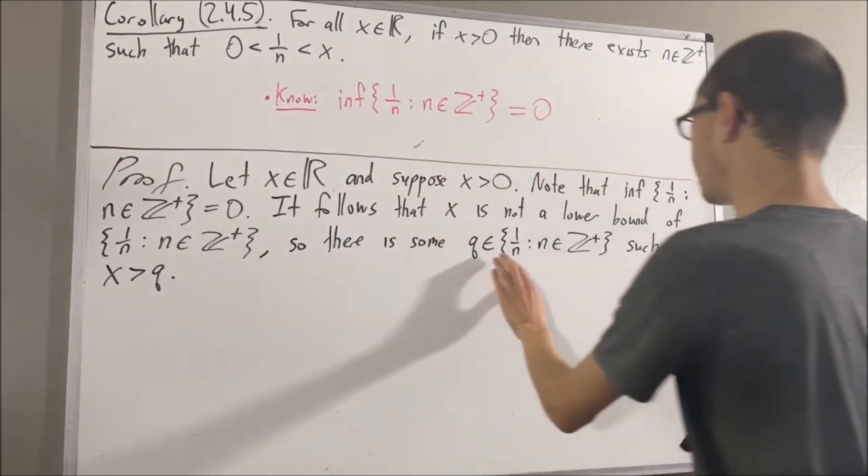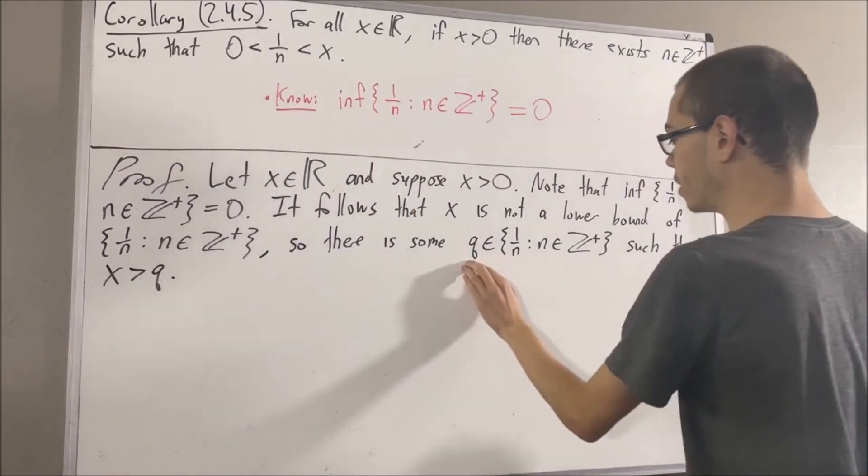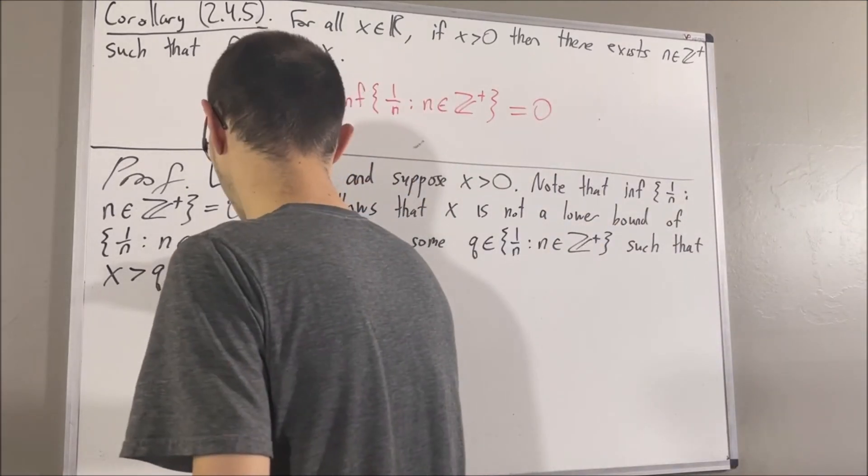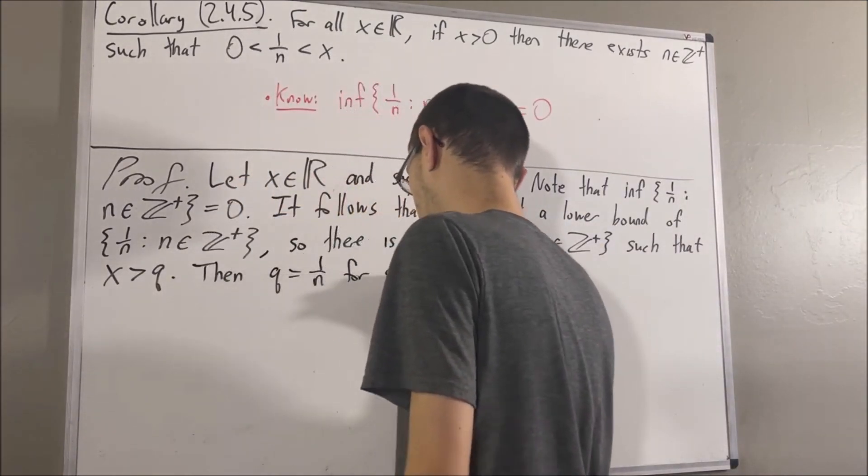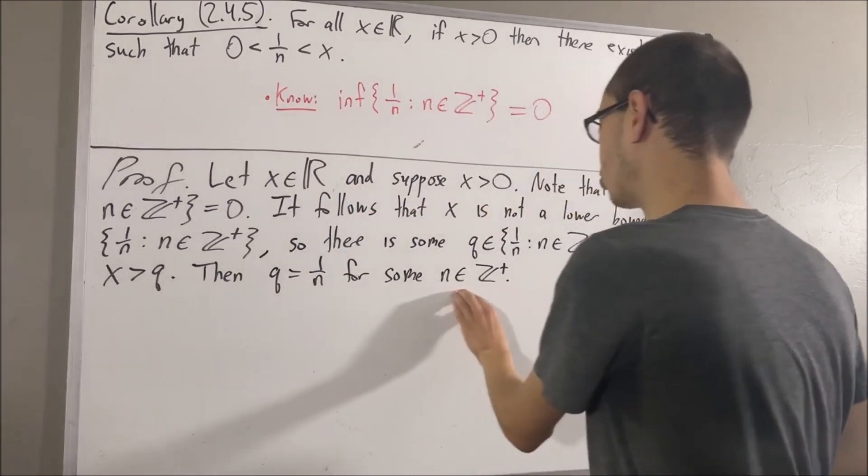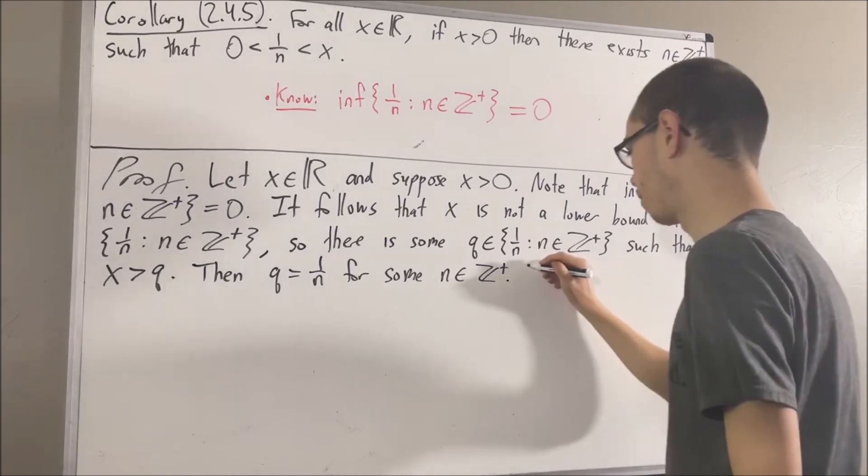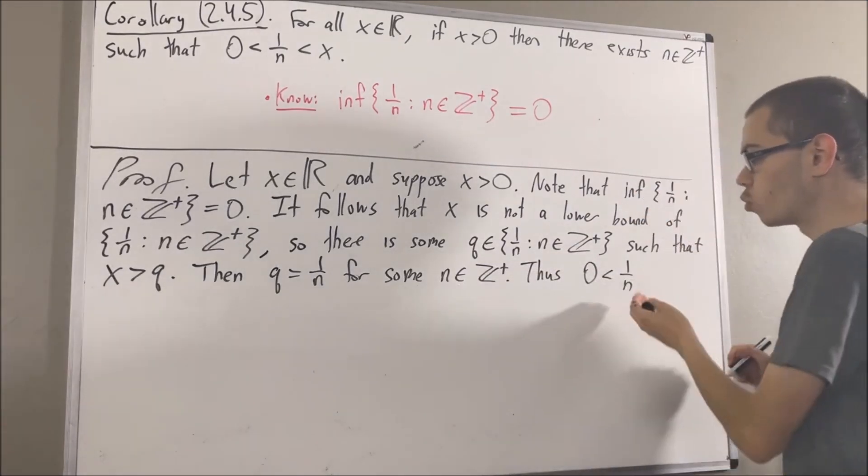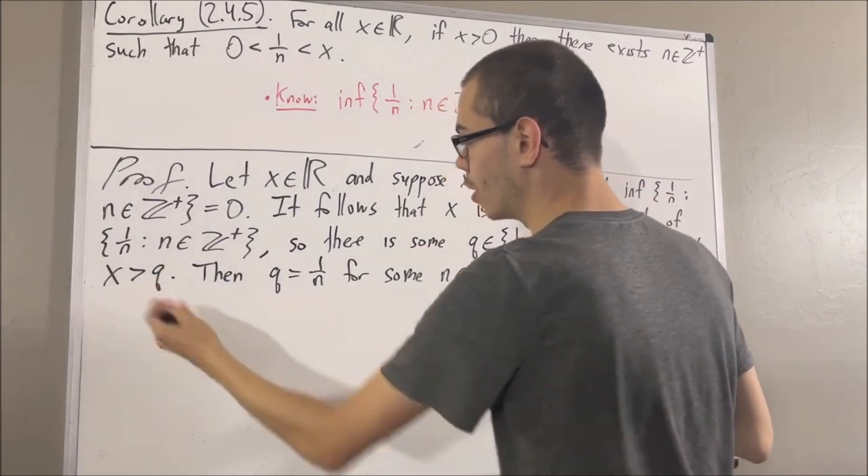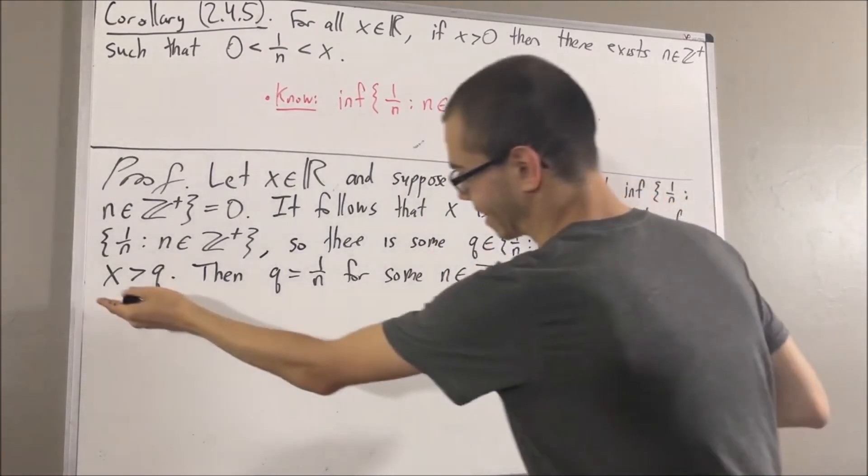Now since q is an element of this set, this means that q is equal to one over n for some positive integer n. Now since n is greater than zero, of course one over n is greater than zero as well. Now since one over n is equal to q and q is less than x, we must have that one over n is less than x.